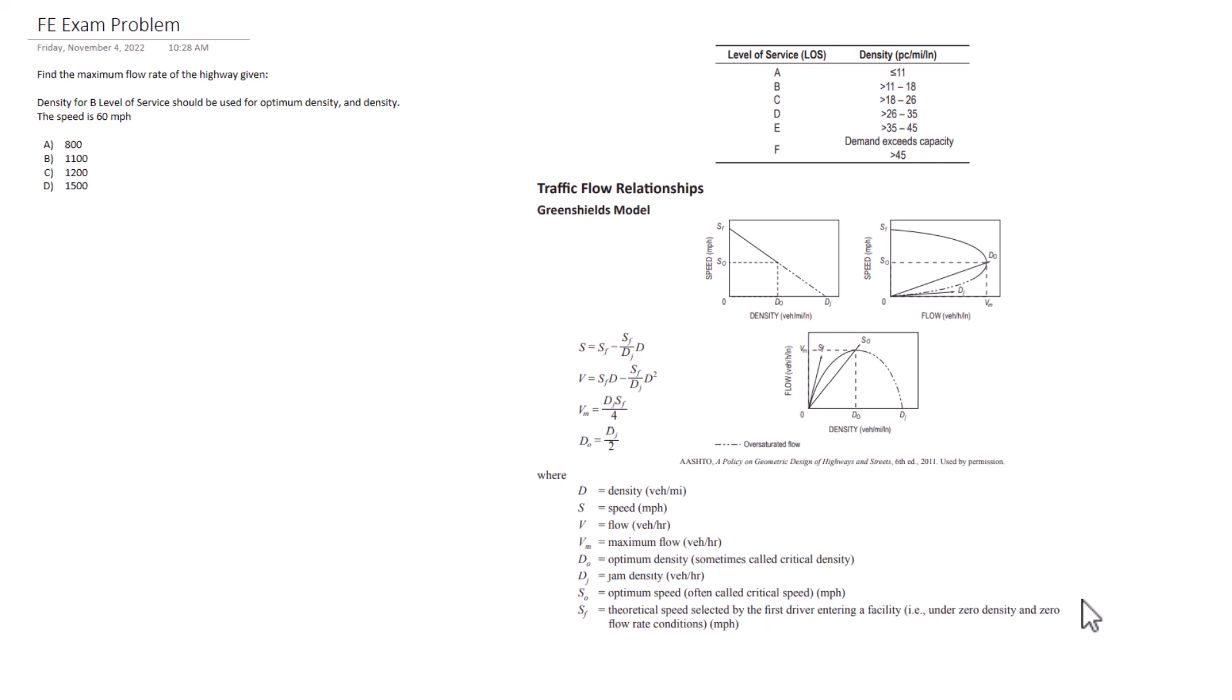In particular, this one we're going to be looking at the maximum flow rate. So the problem states: find the maximum flow rate of the highway given the following parameters. Density for B level of service should be used for optimum density and standard density, and the speed limit for the highway is going to be 60 miles per hour.